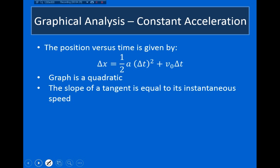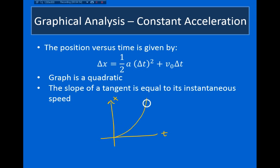Let's move on and talk about what happens when you have a constant acceleration. If I plot the position versus time, it's going to be a bit complicated. The position formula — a kinematic formula — is one-half a delta t squared plus v-naught delta t. So if I plot position versus time, I'm going to wind up with a quadratic. We talked about this with free-fall motion; you're already familiar with the symmetry and the idea that it's going to be quadratic.